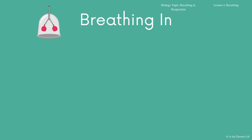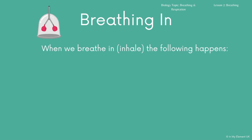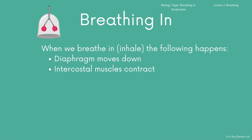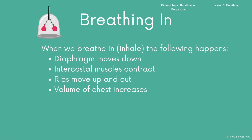So what actually happens when you breathe in? Also known as when we inhale, the following happens: the diaphragm moves down, the intercostal muscles found in between the ribs contract. The contraction of those muscles means the ribs move up and out, which means the volume of the chest increases. Because the volume of the chest increases, the pressure in the chest decreases, and that means air rushes in so we can get air into those lungs.